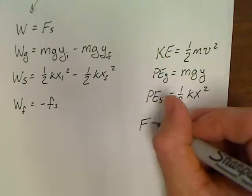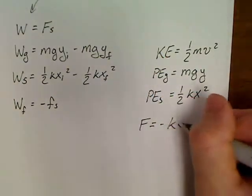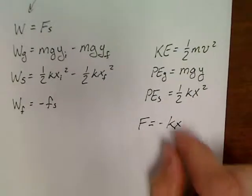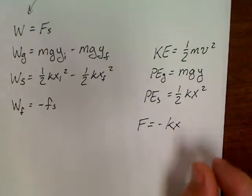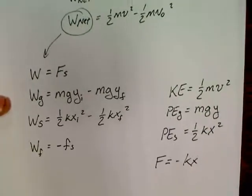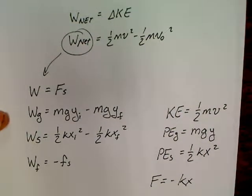Potential energy due to gravity is mgy. Potential energy of a spring is one-half kx². And if by some reason you need it, Hooke's law: F equals negative kx, although you don't actually have to really use the negative sign that much. This is pretty much the summary of the conservation of energy chapter.